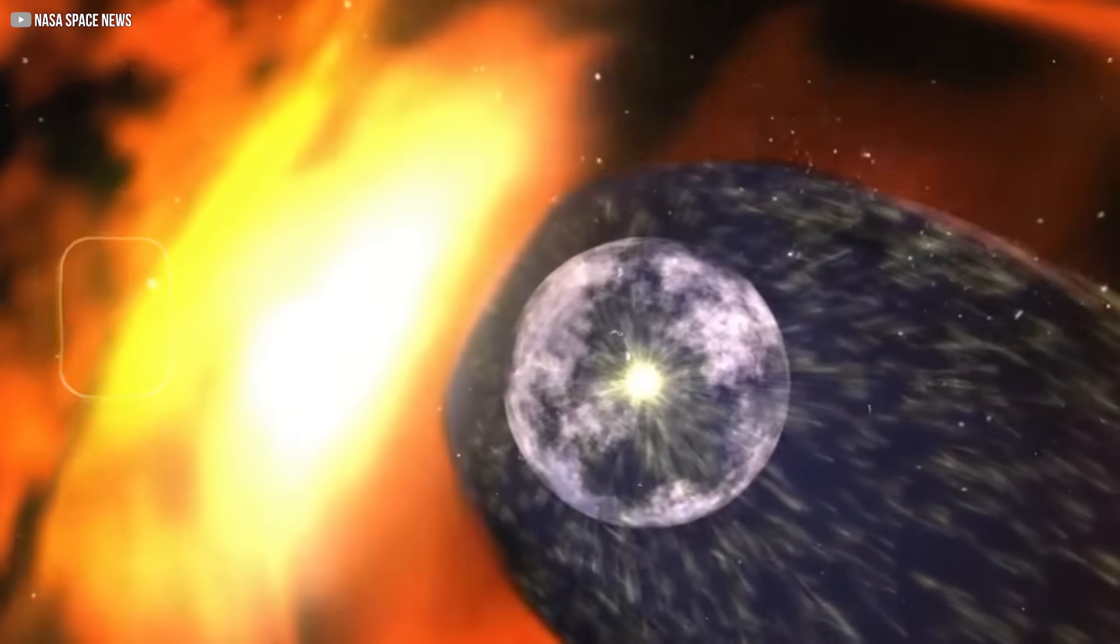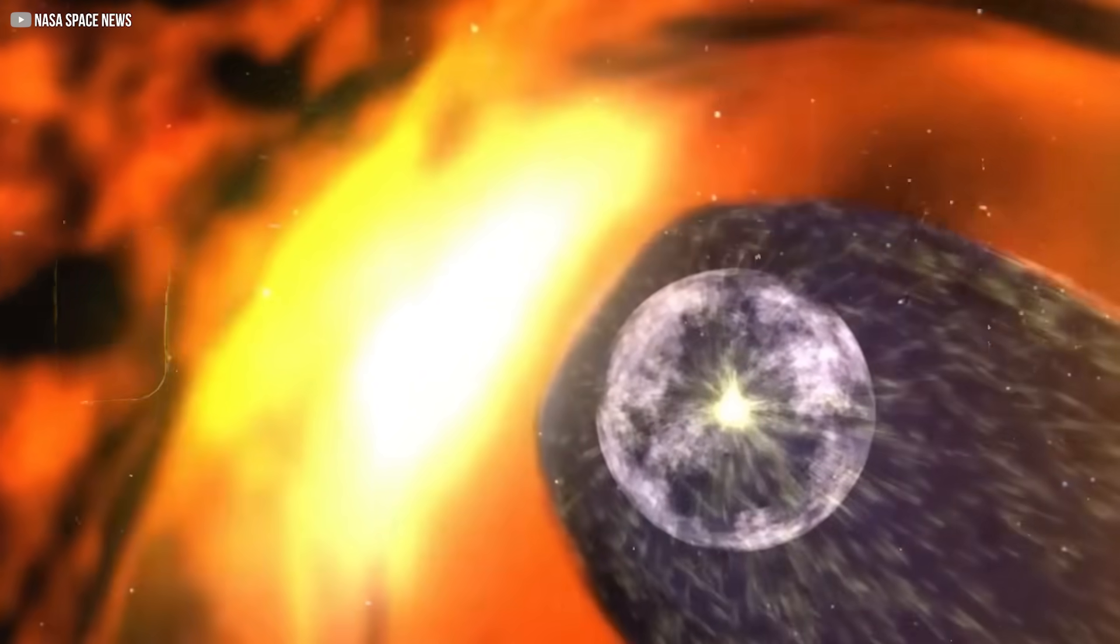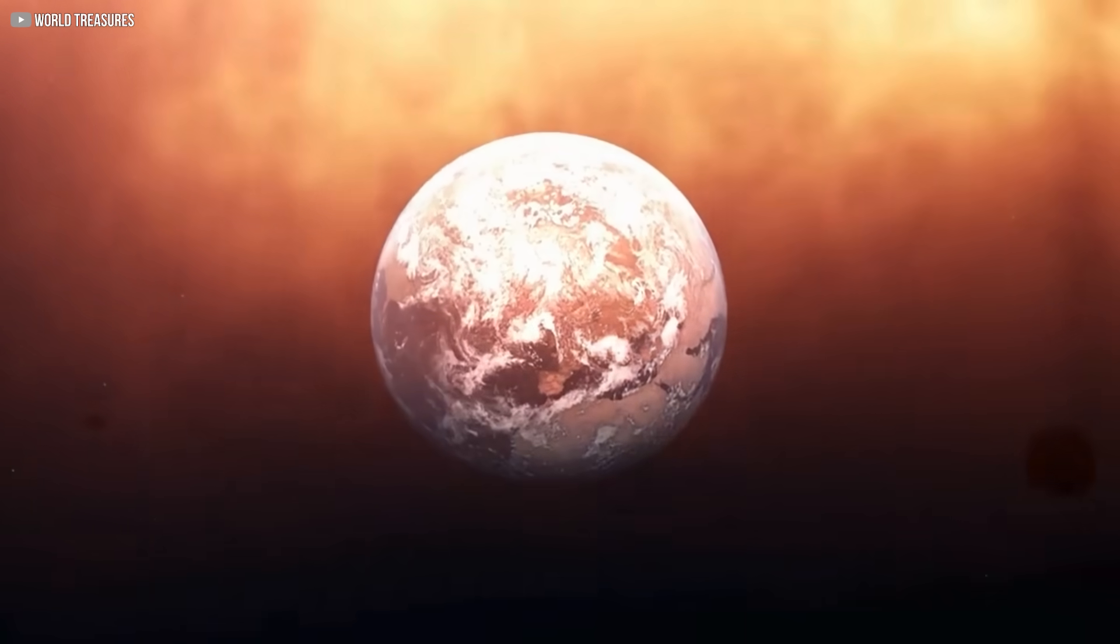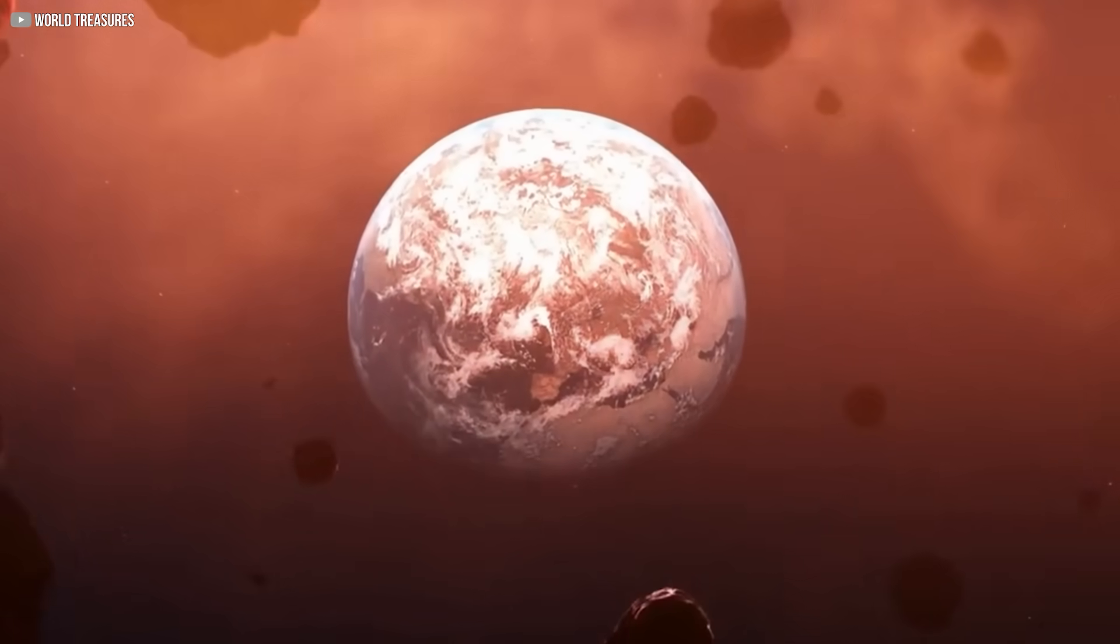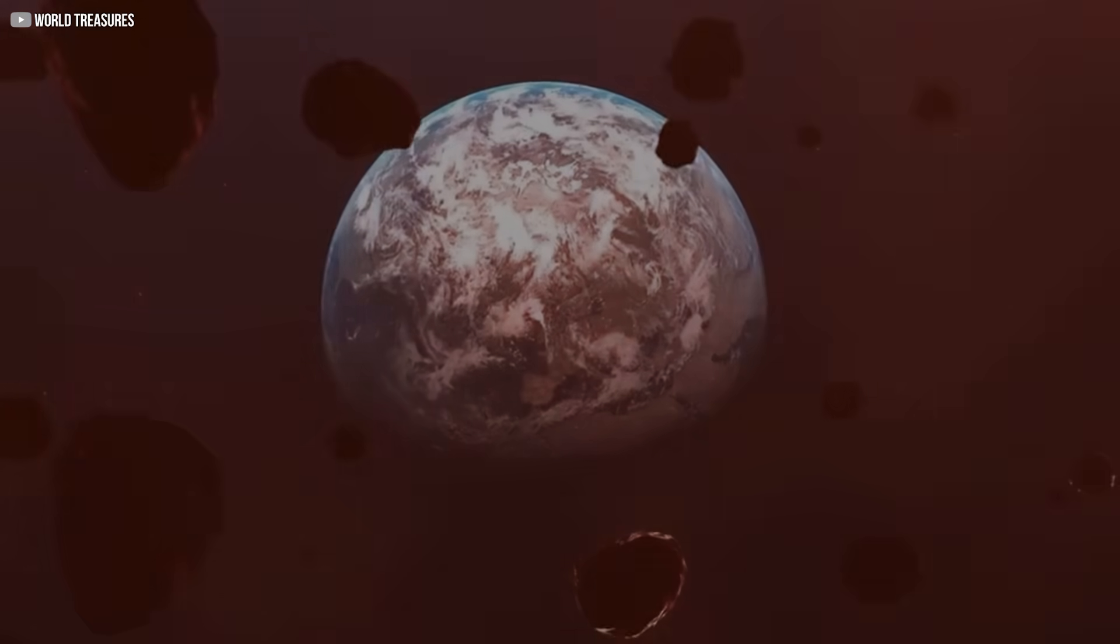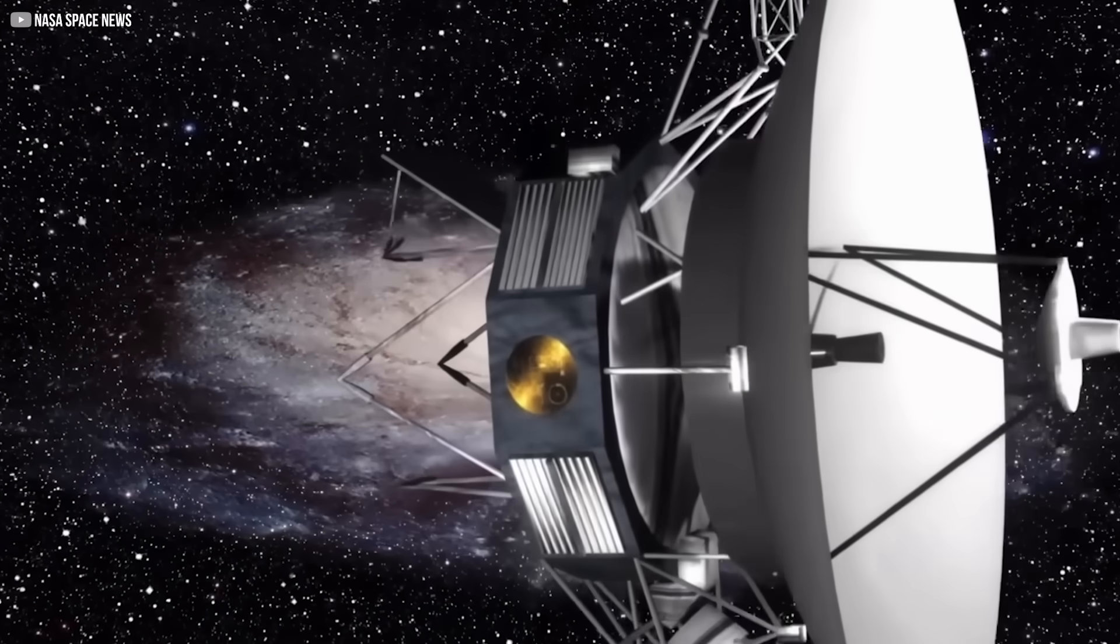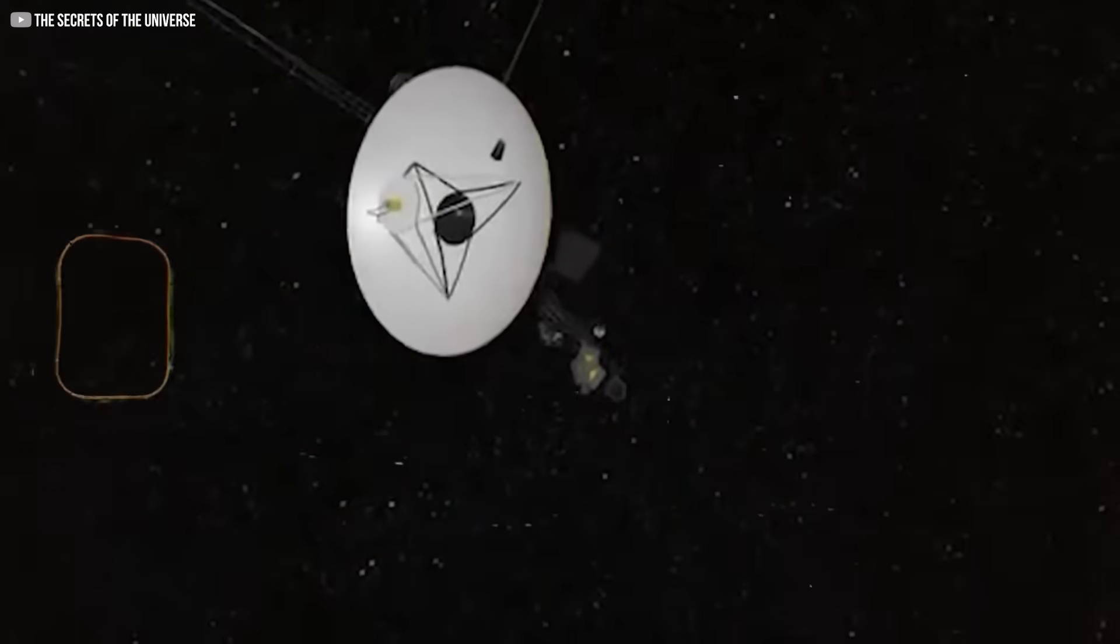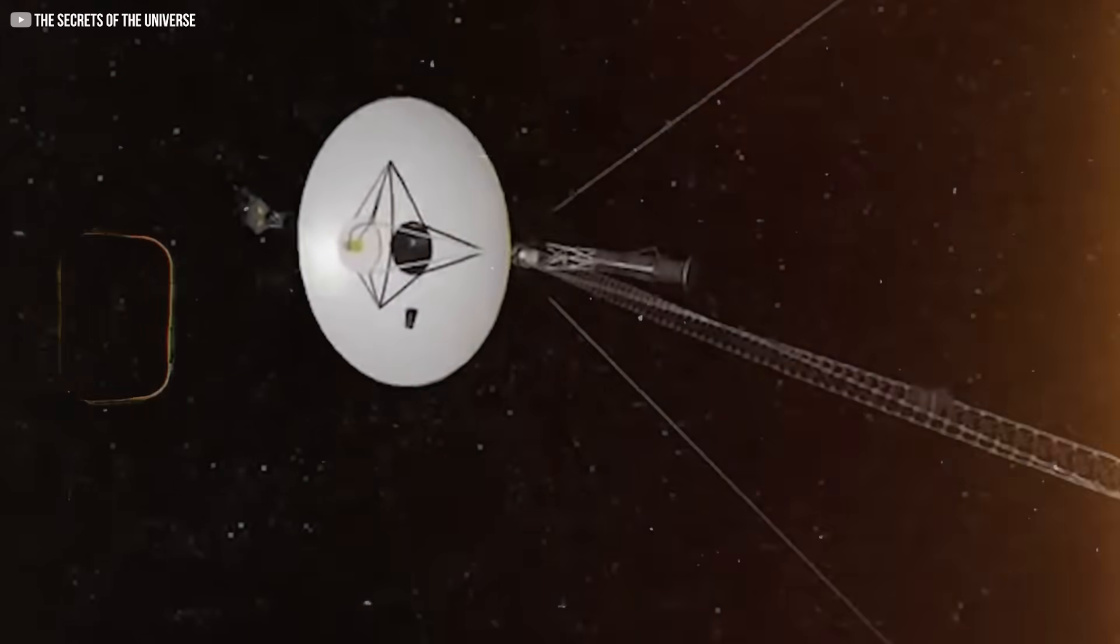Far from being a simple boundary, this region, at temperatures of up to 50,000 Kelvin, is a dynamic, shifting space formed by the collision of cosmic forces. In this video, we'll uncover what the Voyagers discovered, how they survived, and what this tells us about the real limits of the sun's reach.